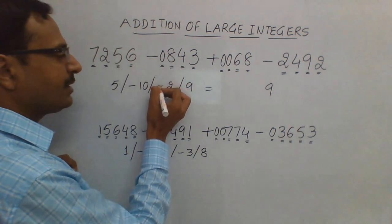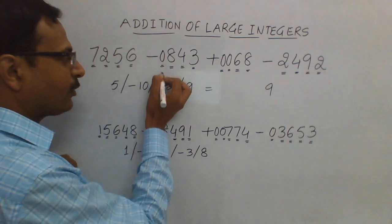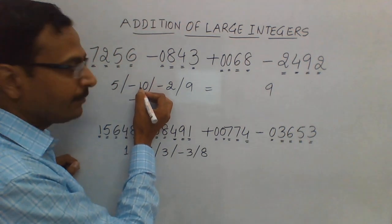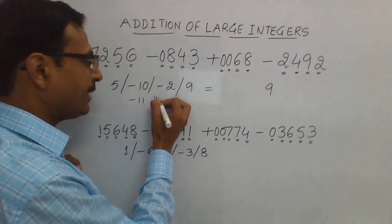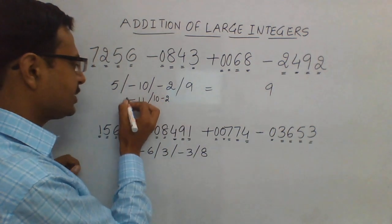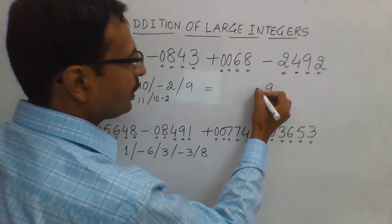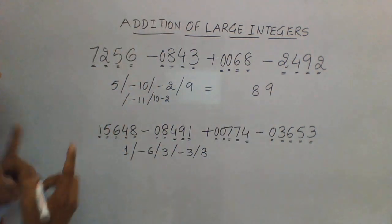If you carry 1 from here, this is going to become minus 11, because 1 is going to be reduced from here and this will be 10 minus 2. This is the next step, and 10 minus 2 is going to give you 8, so the next digit is obtained now.